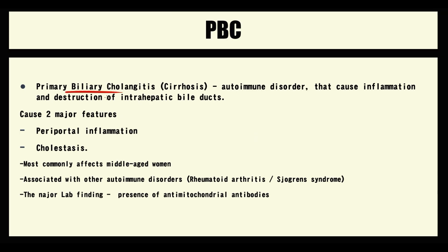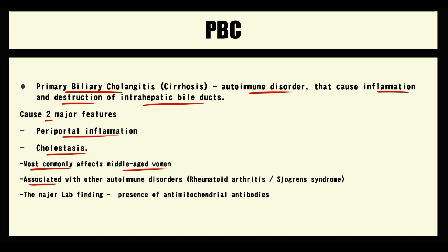Primary biliary cholangitis, or primary biliary cirrhosis, is an autoimmune disorder that causes inflammation and destruction of intrahepatic bile ducts. This disorder has two major features: it causes inflammation in the periportal area and severe cholestasis. It affects mostly middle-aged women, which is logical because autoimmune disorders most commonly affect females. Primary biliary cholangitis is associated with other autoimmune disorders such as rheumatoid arthritis or Sjögren's syndrome, as the presence of one autoimmune disorder significantly increases the risk of developing a second.